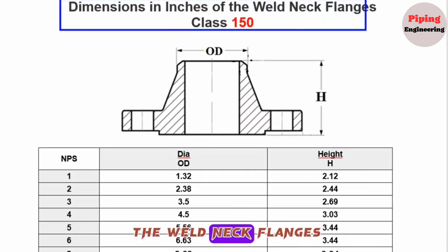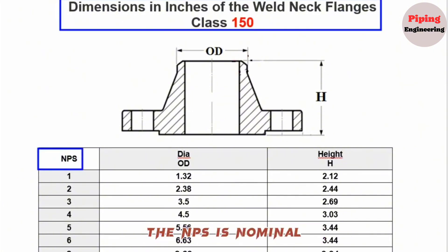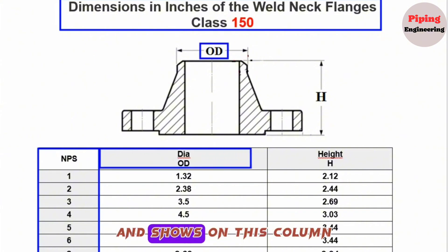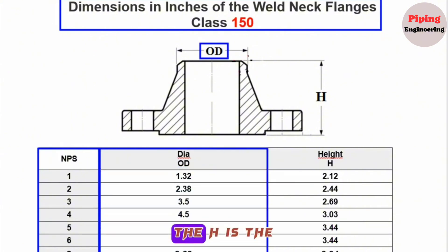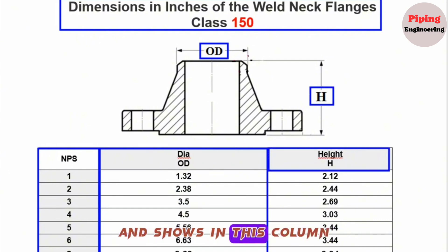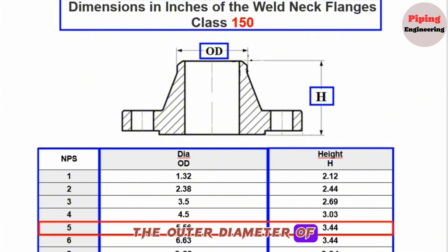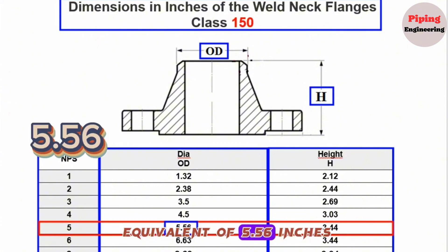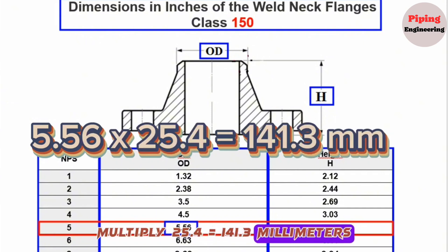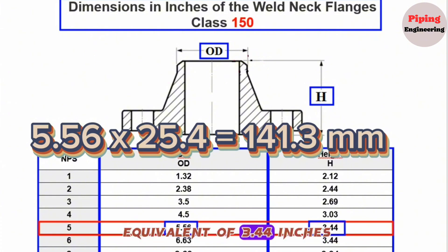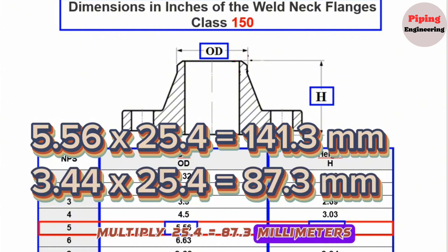Let's first look at the welding neck flange dimensions table — this is the chart in inches for weld neck flange Class 150. The NPS column is nominal pipe size, OD is outside diameter, and H is the height dimension of the weld neck flange. Since the pipeline is 5 inch, we look at that row. The outside diameter is 5.56 inches (141.3 mm). The height of the 5-inch weld neck flange is 3.44 inches, which equals 87.3 millimeters — so we use 87 mm.